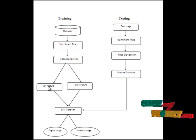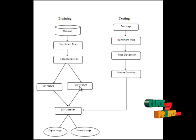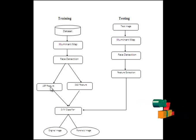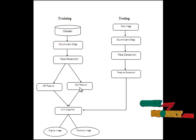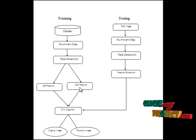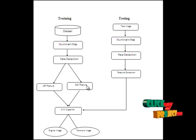We use two techniques for feature extraction: the LBP feature and the statistical feature. LBP is the Local Binary Pattern — it creates a binary pattern for the input face image. After that, statistical features such as energy, entropy, and correlation are calculated for the detected face.